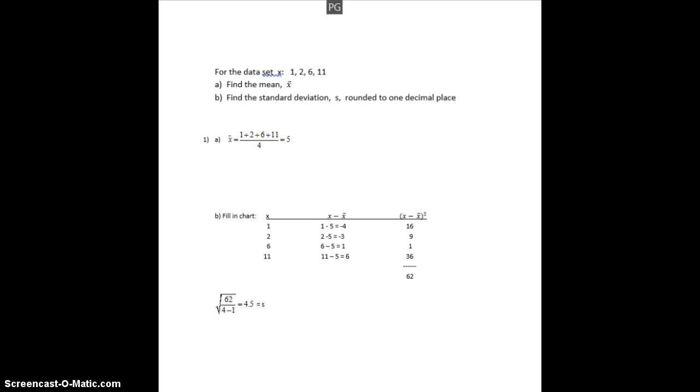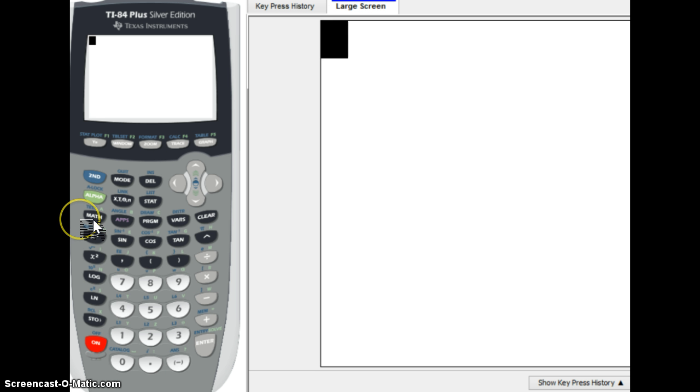You take the square root of 62 over 4 minus 1, and it said round to one decimal place. So, the standard deviation, which is referred to by the letter S, is 4.5. The average distance from the mean is 4.5. And again, we only use standard deviation with the mean.